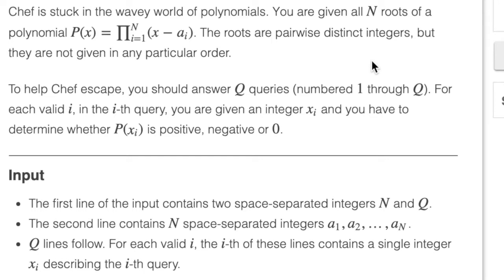To help Chef escape, you should answer q queries, numbered 1 through q. For each valid i, in the i-th query, you are given an integer xi, and you have to determine whether p of xi is positive, negative, or zero.